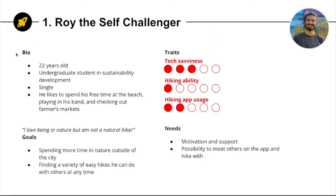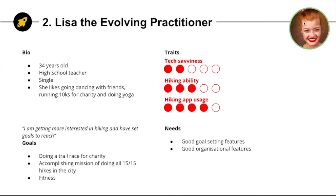Personas can include a number of different demographics and characteristics — for example, age, gender, etc. — in order to make them as realistic as possible, but not too much as this becomes overwhelming. Pick what's relevant to your client's company. Photos should be realistic, not of a supermodel, etc.